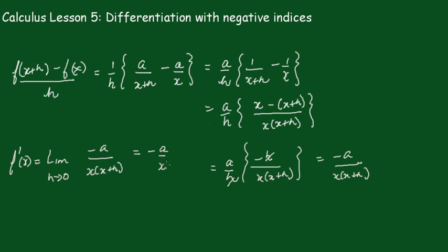This is -ax^(-2). Recall the original function was a/x, which is ax^(-1). This obeys the power rule because the -1 comes down, and subtracting 1 from -1 gives -2.